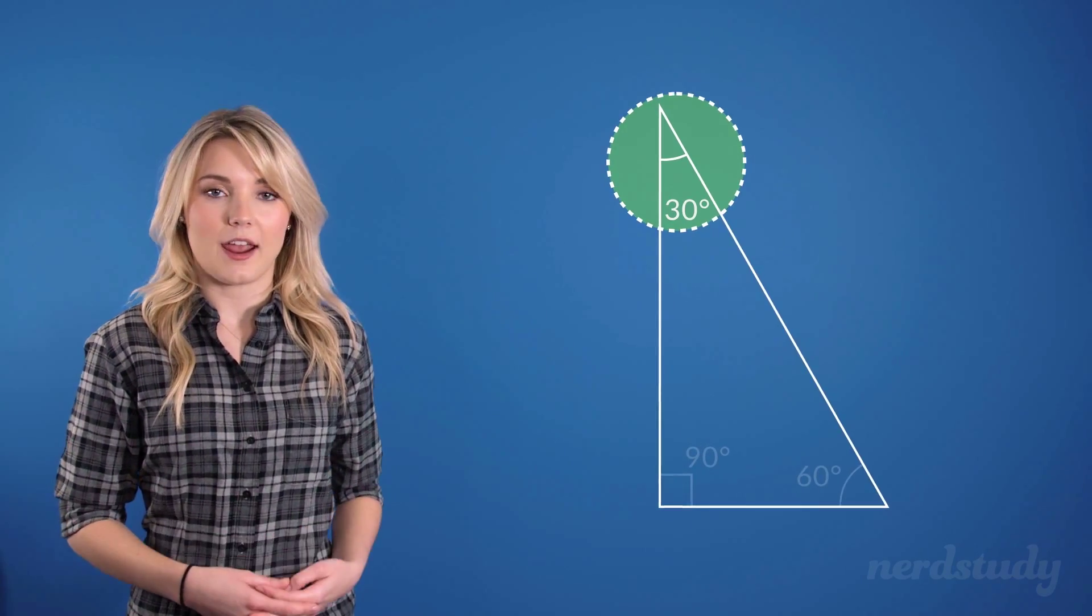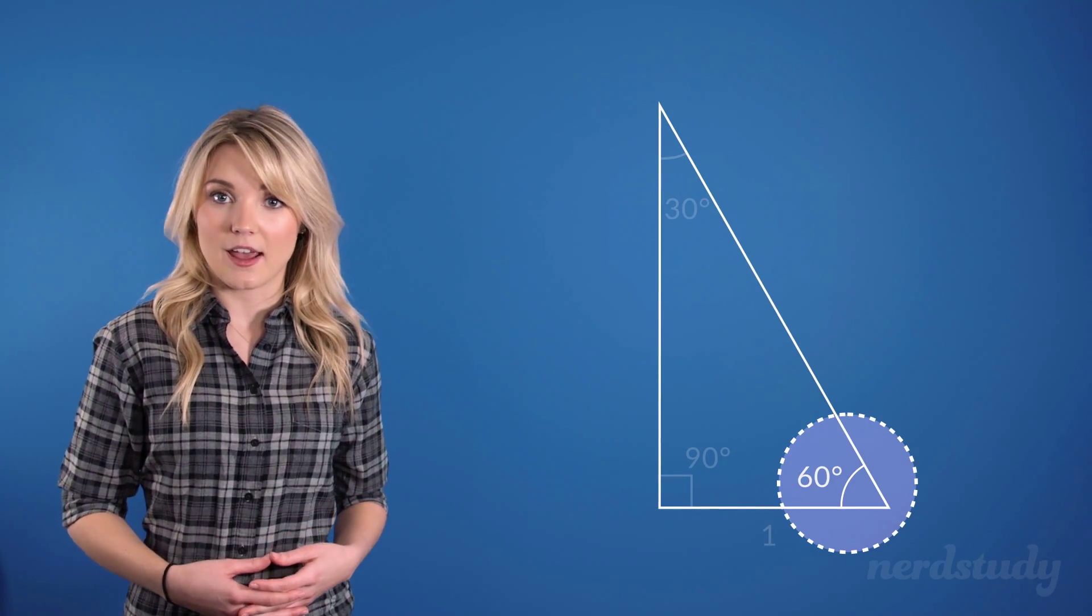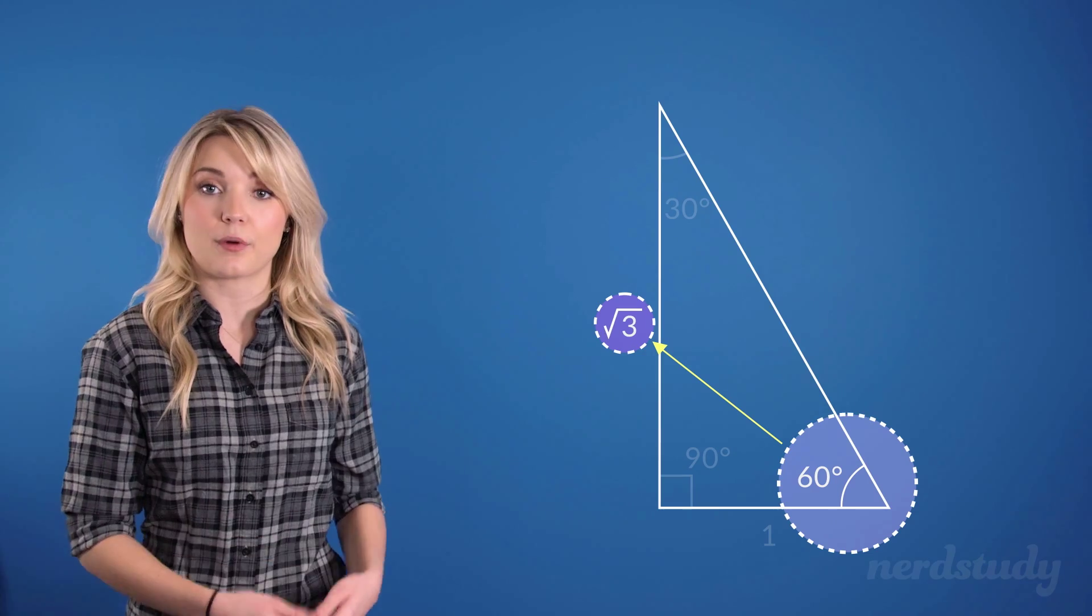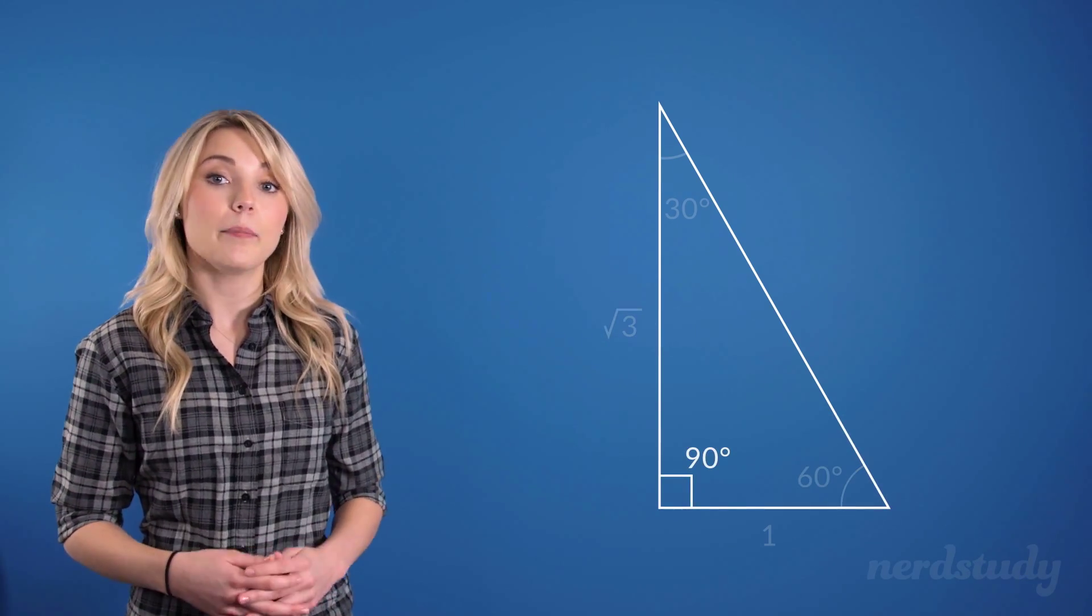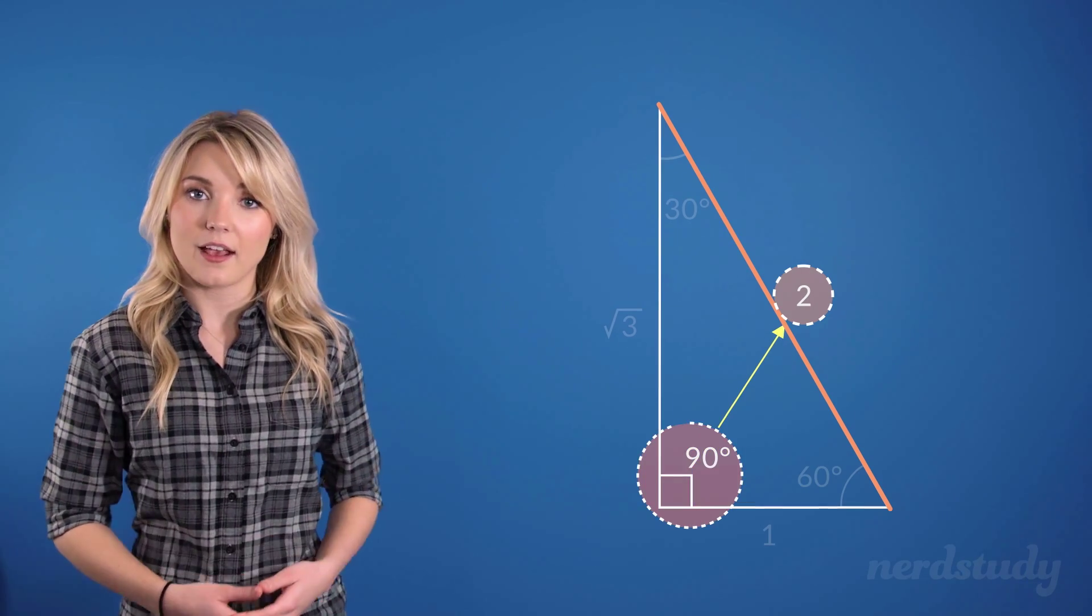Now across from the 30-degree angle is a length of 1. Across from the 60-degree angle is a length of square root of 3. And finally, the hypotenuse has a length of 2, which is across from the 90-degree angle.